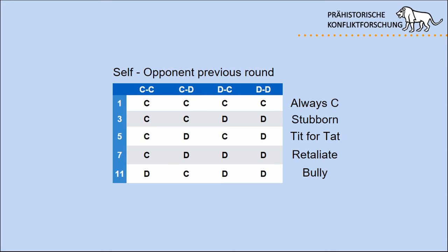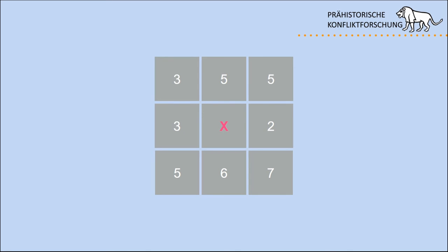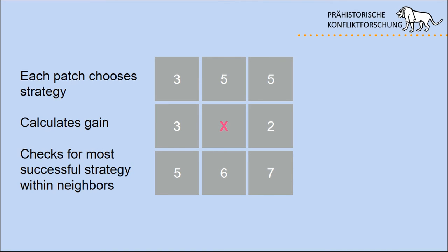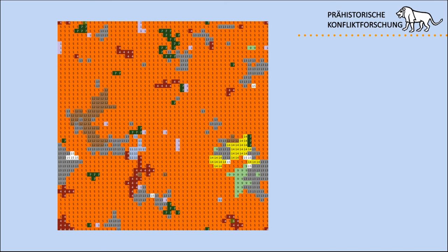Here's a rundown of different strategies. The always-cooperating strategy means cooperating regardless of what happened in the previous round, even if you were defected on repeatedly. The bully strategy means always defecting no matter what your opponent does. Strategies can be numbered: always cooperating is one, bully is eleven. In our model, each patch chooses a strategy every round, calculates the gain, checks for the most successful strategy among neighbors, and then adapts to it.